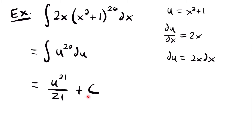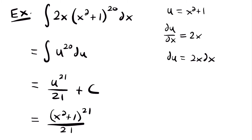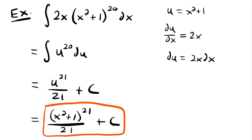Now that we've integrated, it's time to substitute back what we set u equal to, which was x² + 1. Our answer is (x² + 1) to the power of 21 divided by 21 plus c. We set u equal to x² + 1, so plugging that back in gives us that whole quantity to the 21st power, with everything else the same as when we integrated.